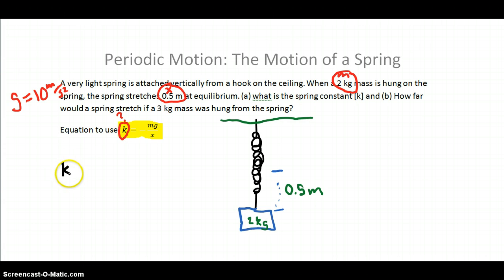This is part A. K is equal to negative, again, our mass is 2 kilograms, so 2. Gravity, we said, was 10, so put that in there. And then the distance that the spring stretched was 0.5. This comes out to a negative 20 divided by 0.5. Now, whenever you divide something by half, you're essentially saying what times 1 half is equal to 20. Our answer comes out to be negative 20 divided by 0.5 comes out to be negative 40.